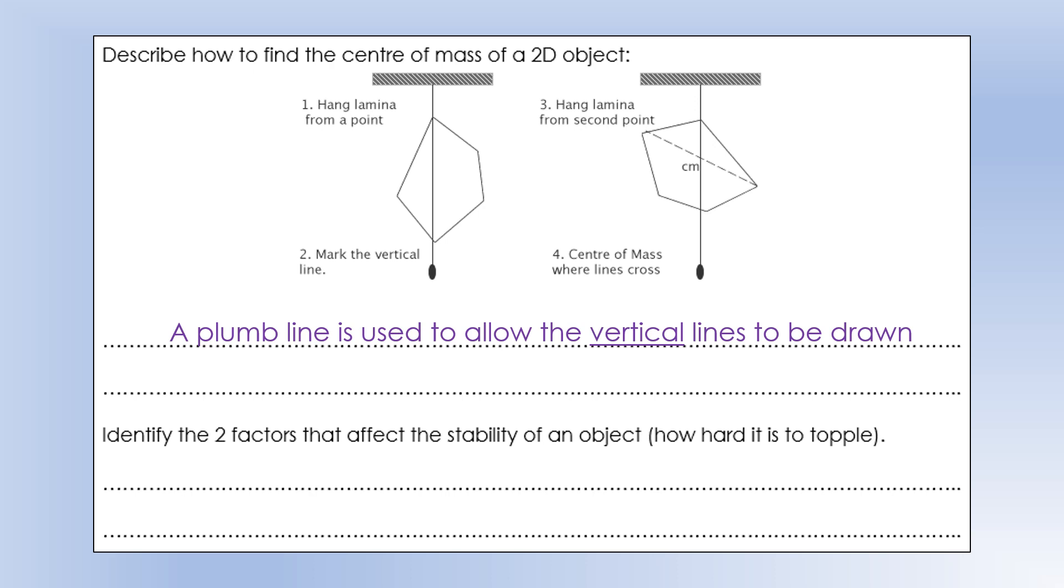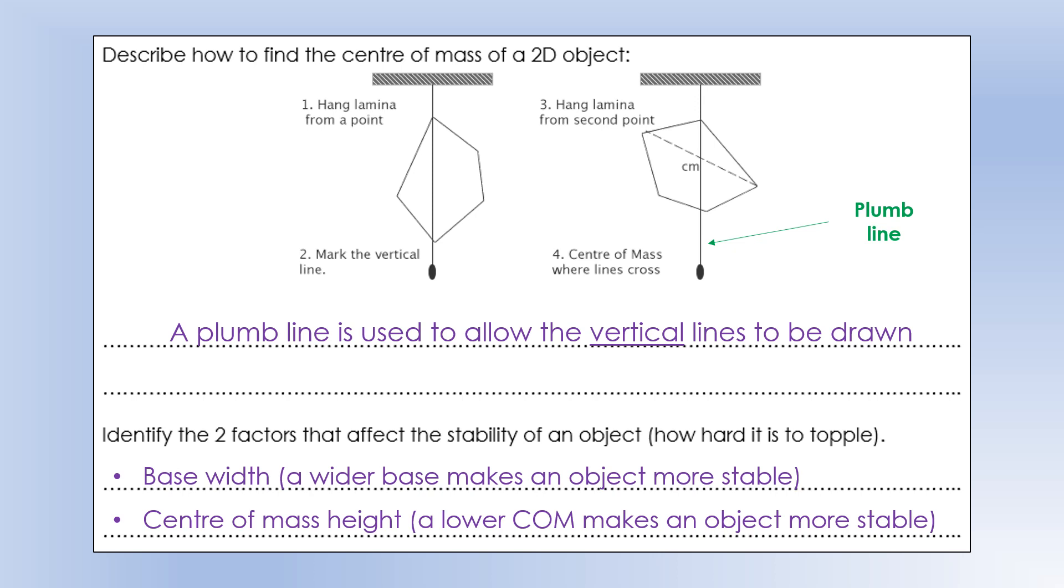The two factors that affect the stability of an object, or how hard it is to topple. Base width, so a wider base makes an object more stable. And the other thing is centre of mass height. A lower centre of mass makes the object more stable.